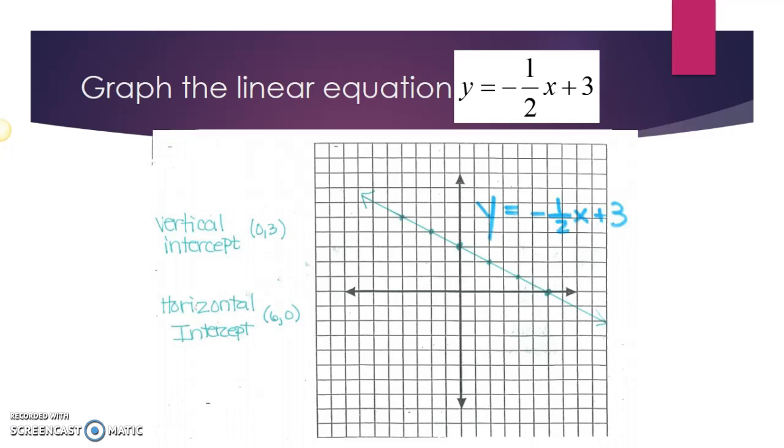So the more points you have, the more accurate your graph is, and the better your chances are of correctly identifying that horizontal intercept to make sure you're crossing at the right point on the x-axis.